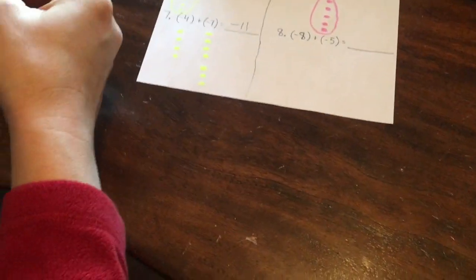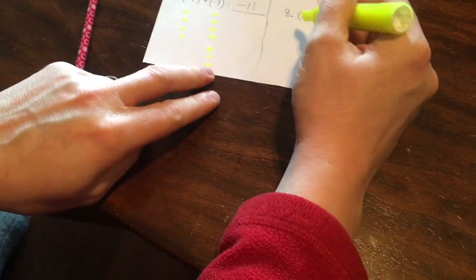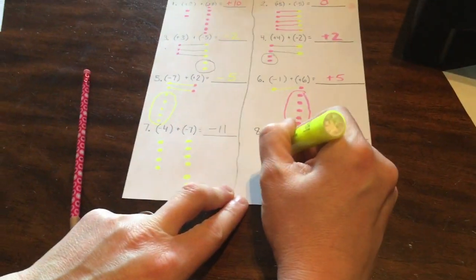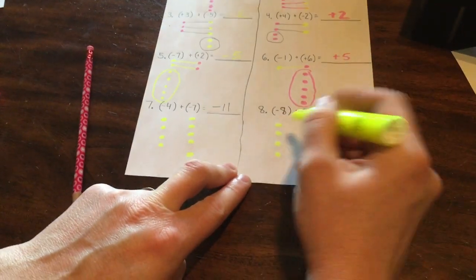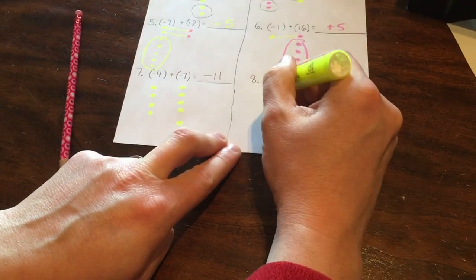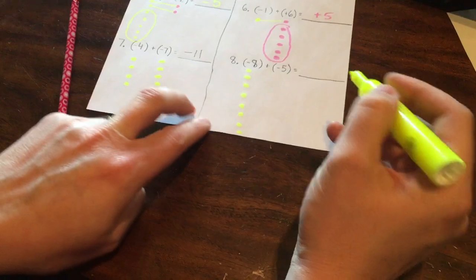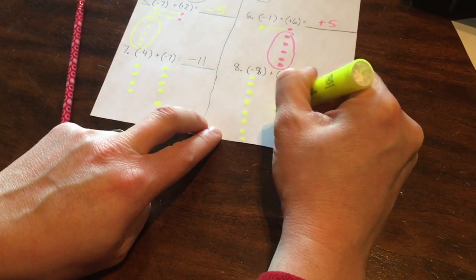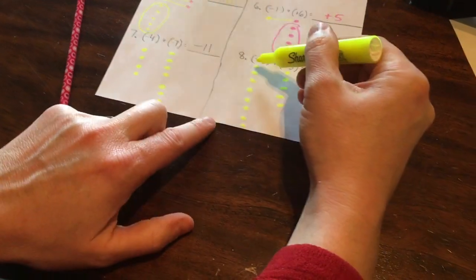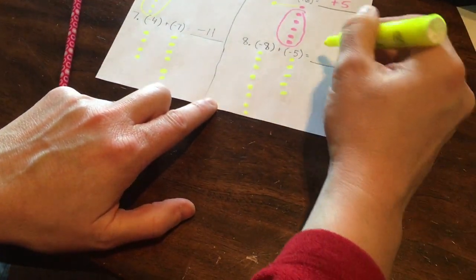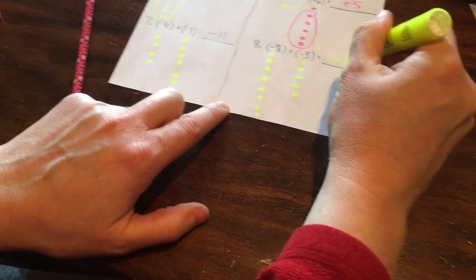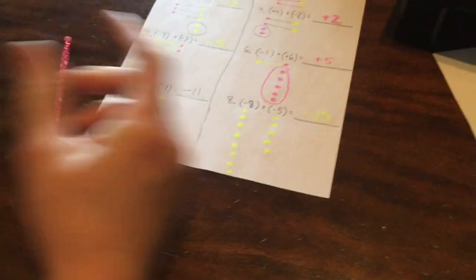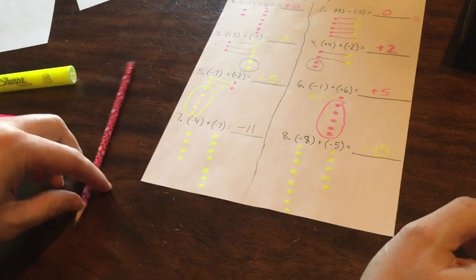And then my last one. There's my negative eight. One, two, three, four, five, six, seven, eight, and then five more. One, two, three, four, five. And I just add them all up. Count them all up. I have negative thirteen. So this is how you add zero pairs or add integers using zero pairs to help you.